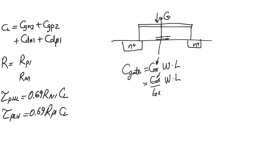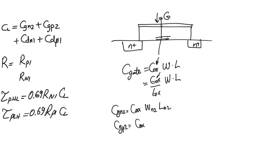Therefore, C_gate_N2 = C_oxide * W_N2 * L_N2, and C_gate_P2 = C_oxide * W_P2 * L_P2.